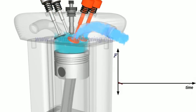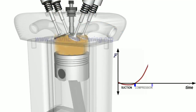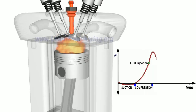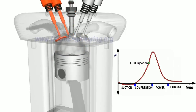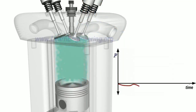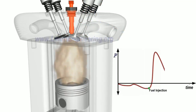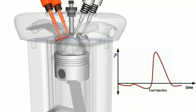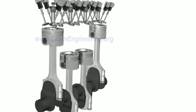In single-cylinder engines, you can see a fluctuation in the output from the graph. Using multiple cylinders helps smooth out this fluctuation and deliver more consistent energy.